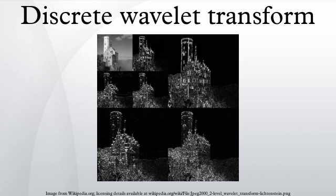Since half the frequencies of the signal have now been removed, half the samples can be discarded according to Nyquist's rule. The filter outputs are then subsampled by two. This decomposition has halved the time resolution since only half of each filter output characterizes the signal. However, each output has half the frequency band of the input, so the frequency resolution has been doubled. With the subsampling operator, the above summation can be written more concisely, though computing a complete convolution with subsequent down-sampling would waste computation time.